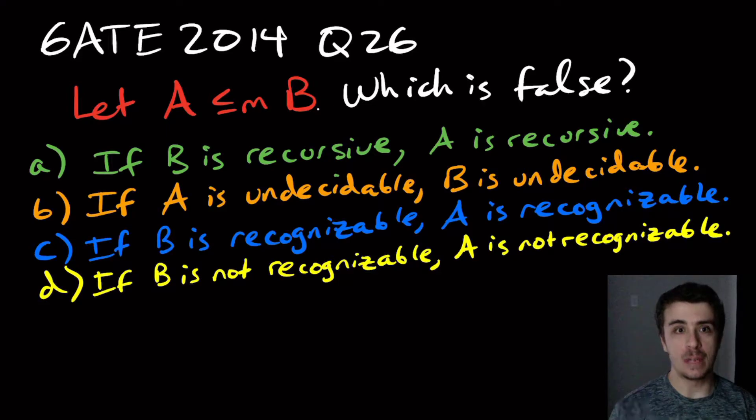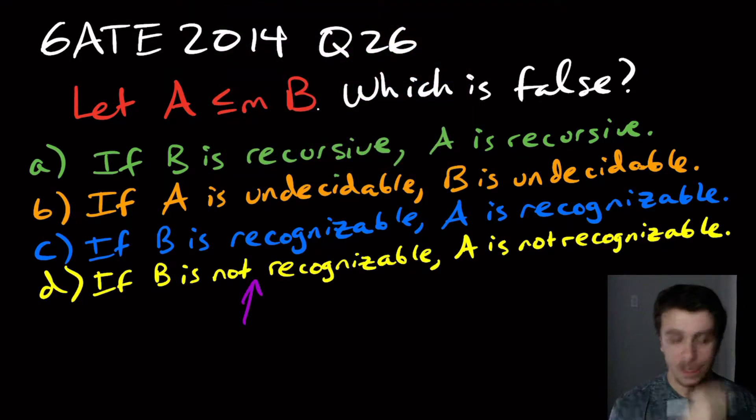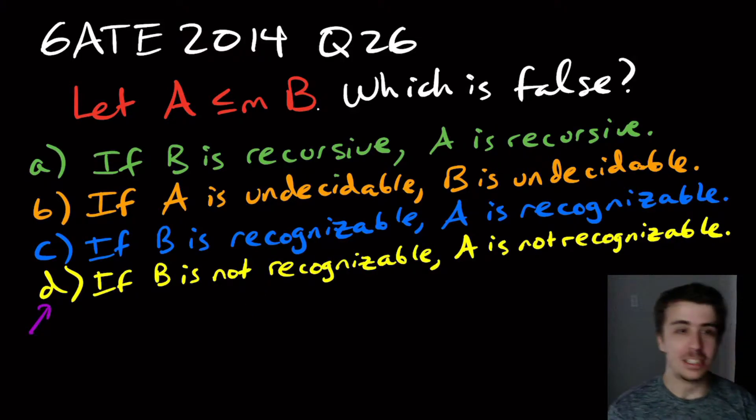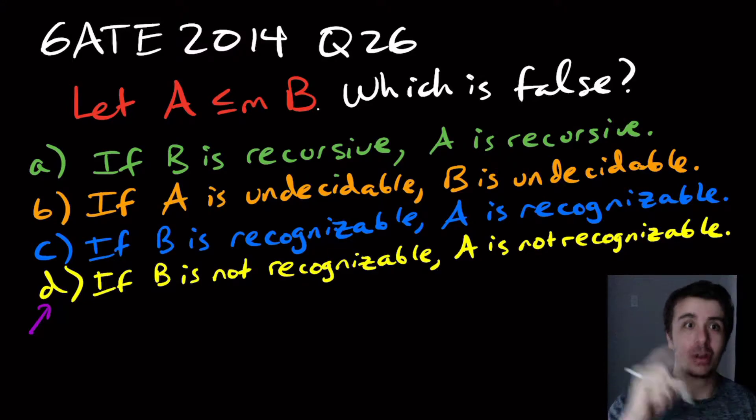So pause the video, put into the comments what you think the answer is. So the answer is D. I should do it this way. D. So D is the right answer. So it's the one that's false, not the one that's correct in terms of which one is true. Which one of them is false, D is the false one.